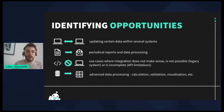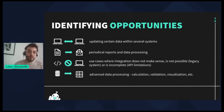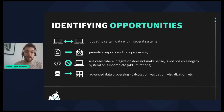You might be asking: what are good candidates for process automation? Typically, we are talking about updating data within several systems, periodical reporting, and simple data processing. Also, very good candidates include use cases where integration does not make sense or is not possible due to legacy system constraints or API limitations. Advanced data processing like calculations, validations, and visualizations are also very good candidates.